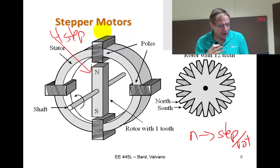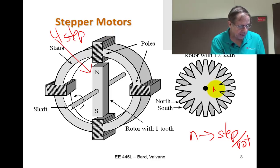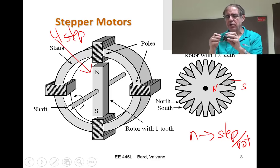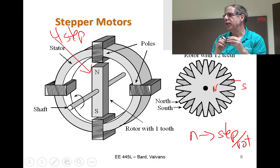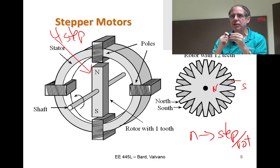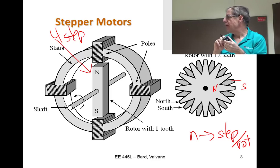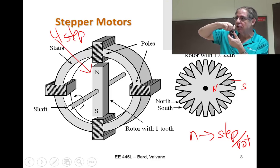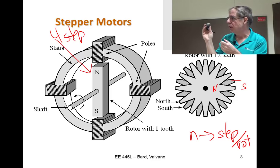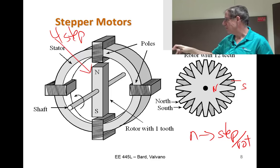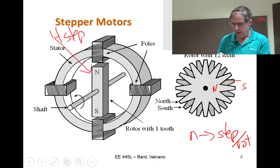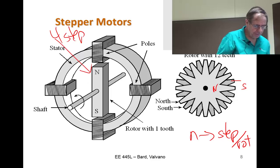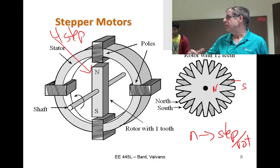The second motor to pass around — count the steps per rotation. You'll feel 50 clicks per rotation. This is a 200-step-per-rotation motor, which is much better than the other one at about 12 steps per rotation. You can feel the steps because of the permanent magnets. Pass it around and feel the difference.